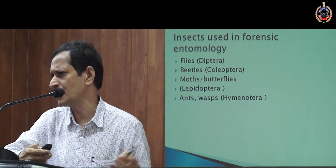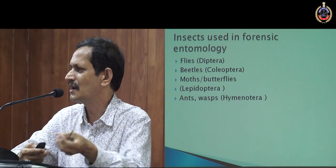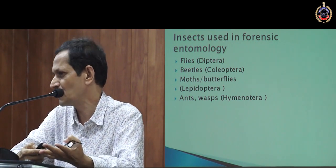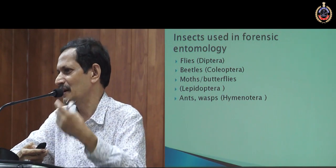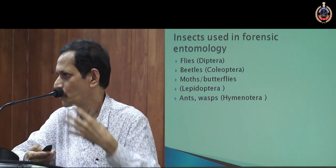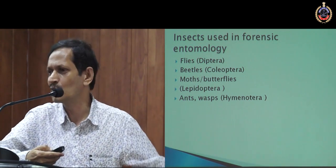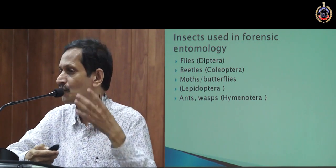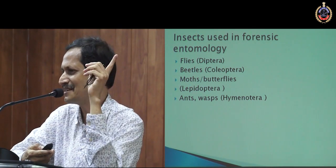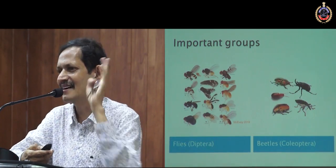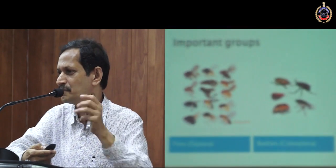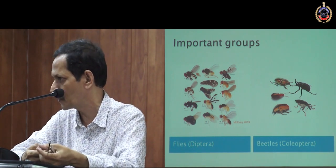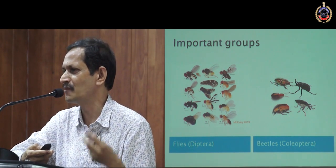These are the important insects in forensic entomology. There are about 40 orders of insects — like Diptera, Coleoptera, Lepidoptera. The most important groups are flies and beetles. Flies means house fly, blow fly, flesh fly — there are different kinds. They are known as dipterans because they have only two wings. Normally all other insects have four wings, but in Diptera, the hind wings are modified into structures known as halteres, which are balancing organs. So they have only one pair of wings.